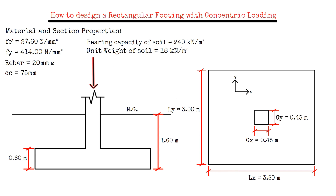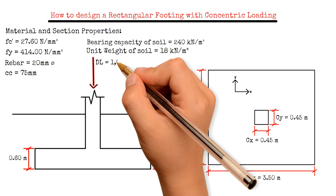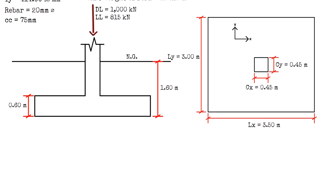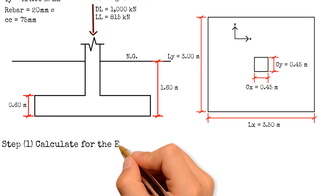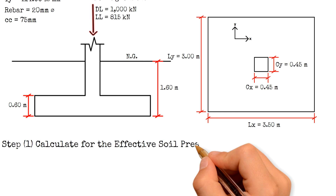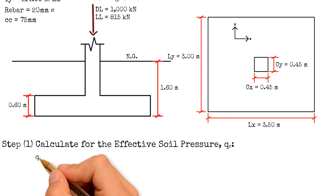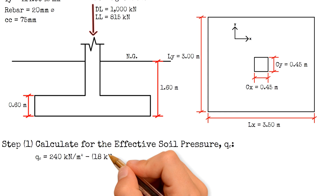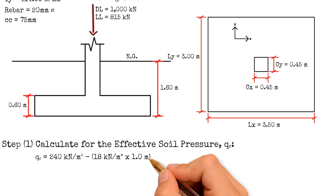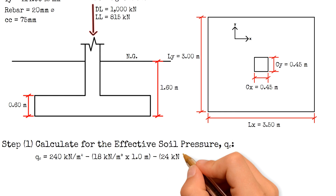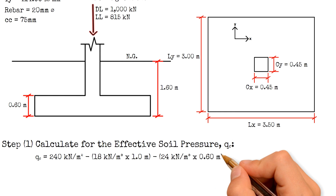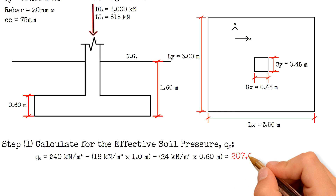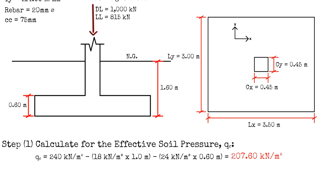For the loadings, the dead load is 1000 kN and the live load is 815 kN. The first step is to calculate for the effective soil pressure Q_E, which equals the bearing capacity 240 kN/m² minus the weight of soil (18 kN/m³ × 1 m height) minus the weight of concrete (24 kN/m³ × 0.6 m thickness). That gives us a value of 207.6 kN per square meter.